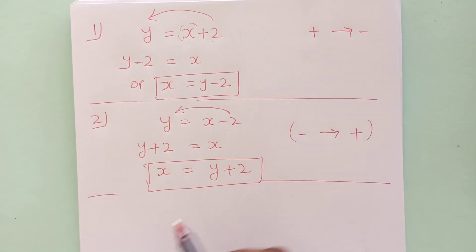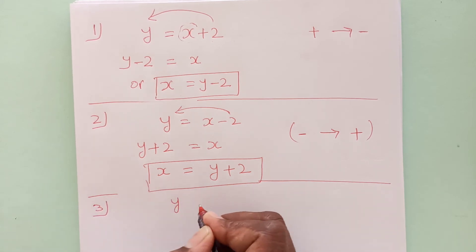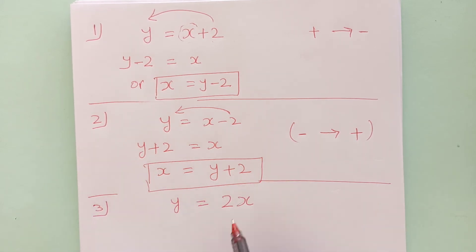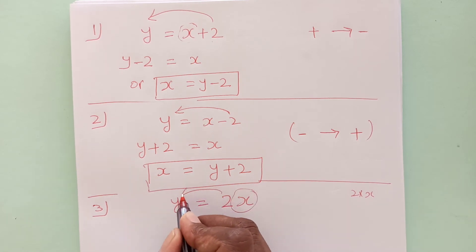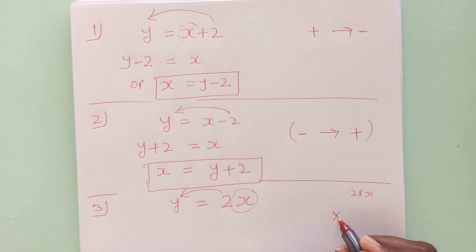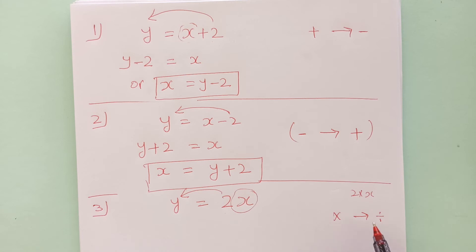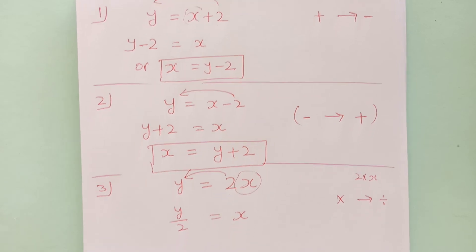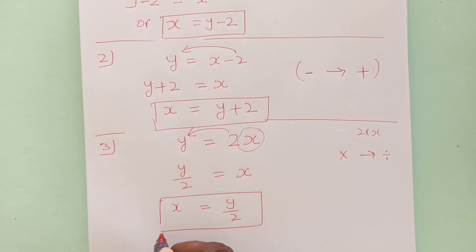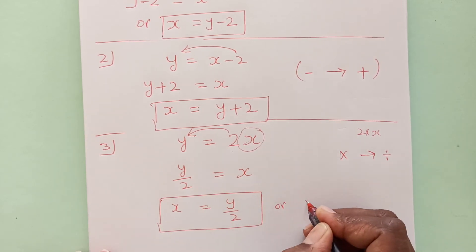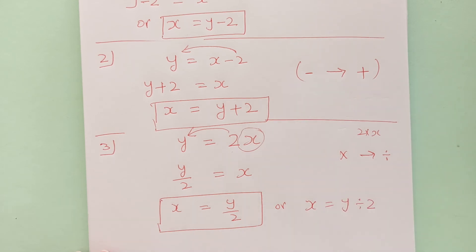This was addition becoming subtraction. Now let's take another example with multiplication. 2x means 2 times x. We need x the subject again, so shifting 2 to the other side — as this is multiplication, it will become division. Remember: change side and change operation. So this will be y over 2 equals to x, meaning x equals to y over 2, or x equals to y divided by 2. It is the same thing.